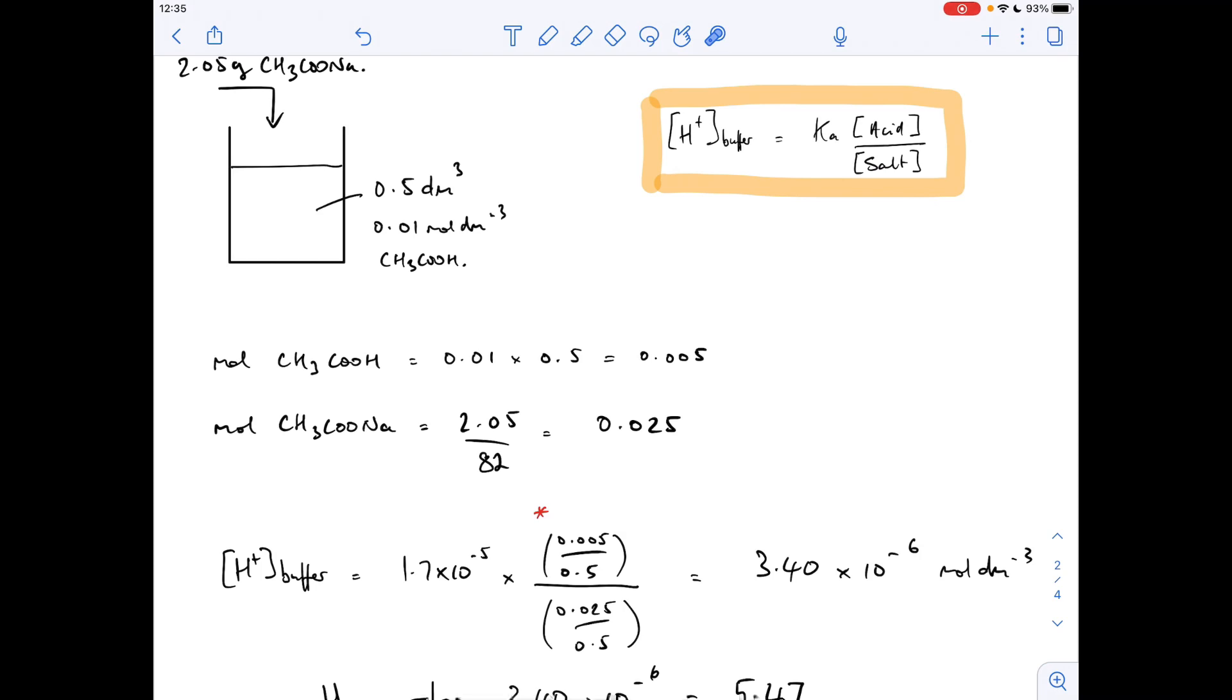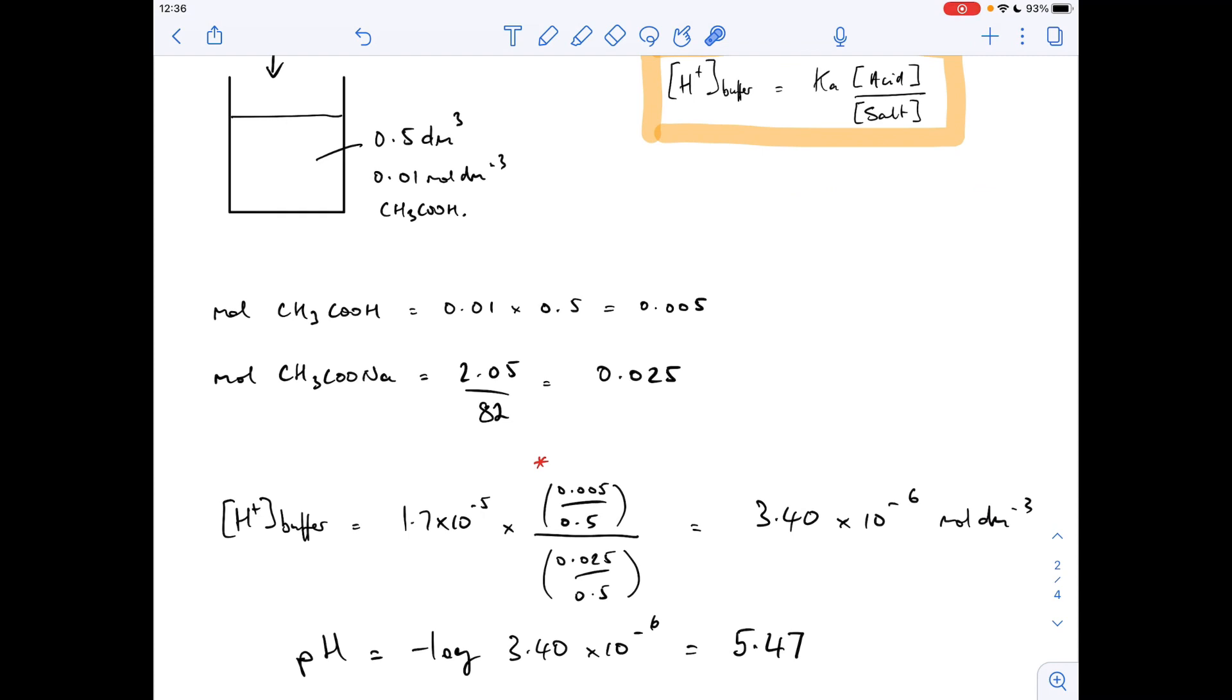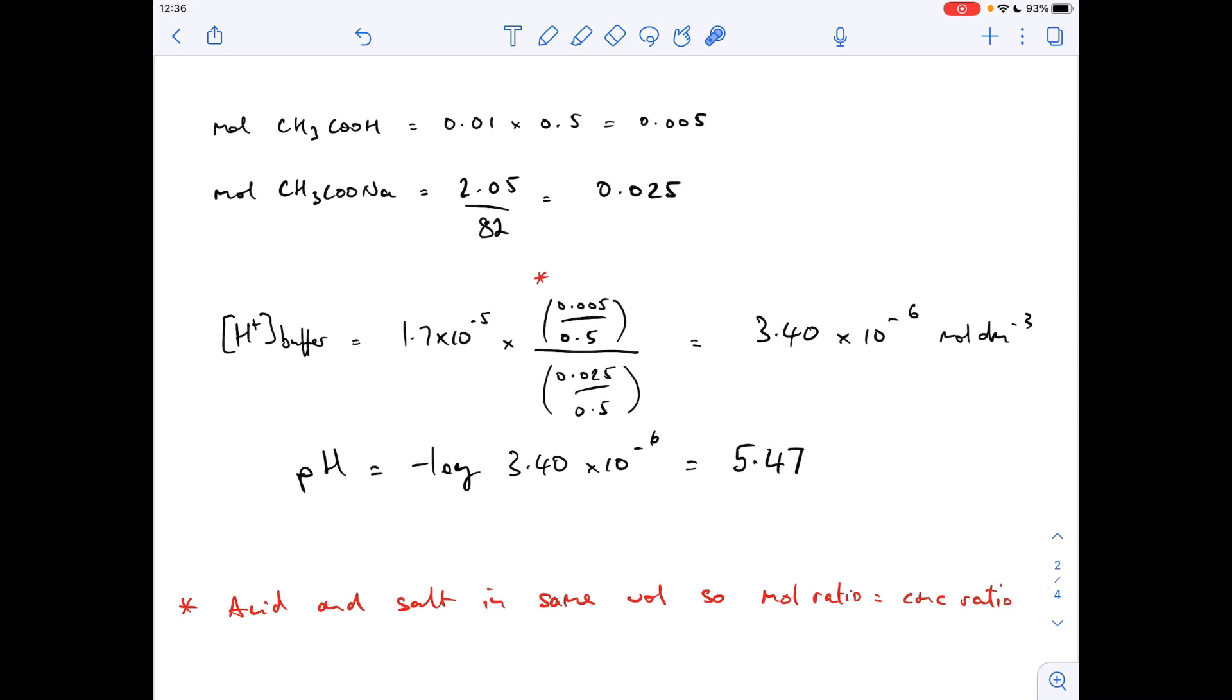So H+ concentration of the buffer: Ka times the acid concentration divided by the salt concentration, and that gives you that. And we just minus log, 5.47. And there's just a reminder there - the acid and salt are in the same volume, so the mole ratio does actually equal the concentration ratio.